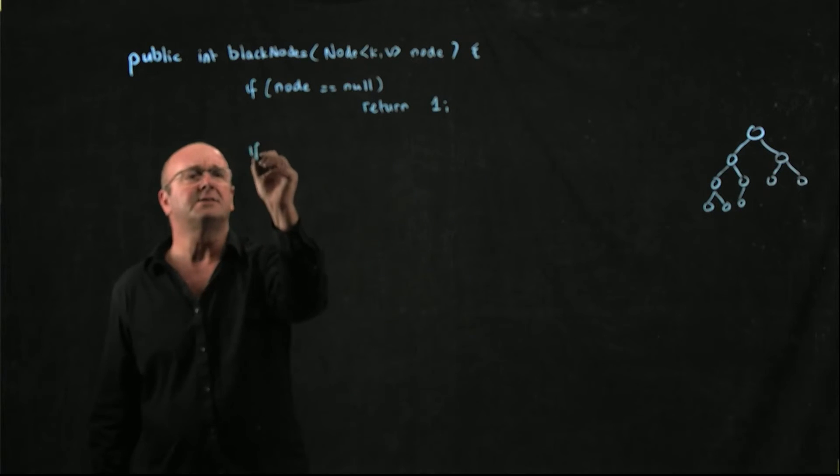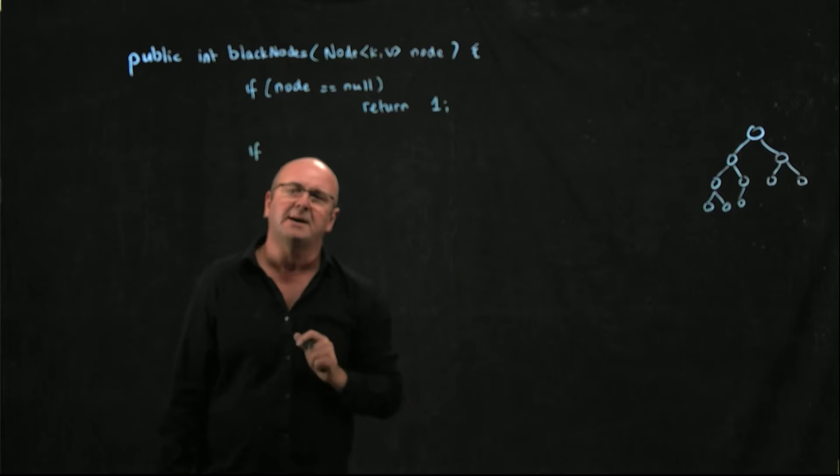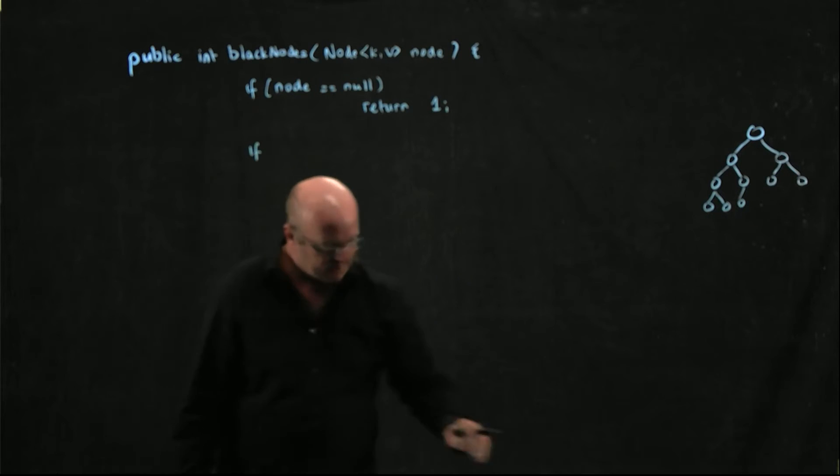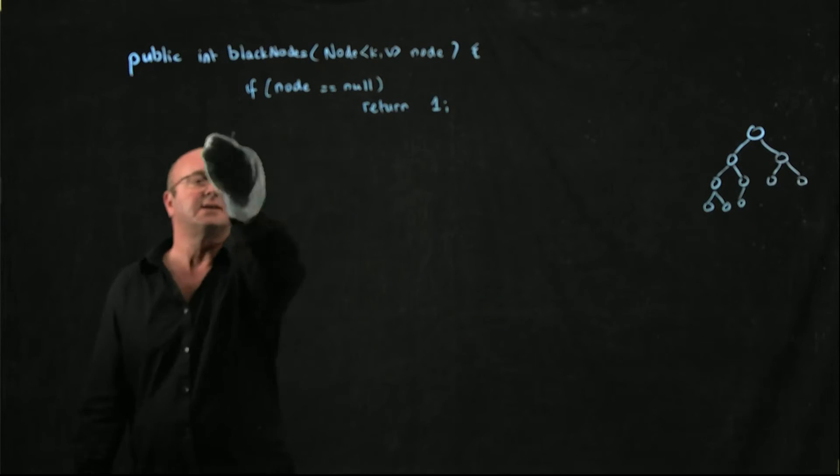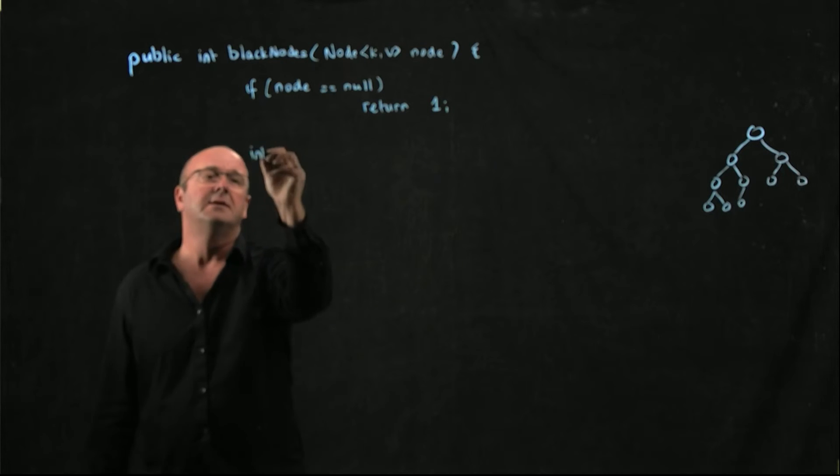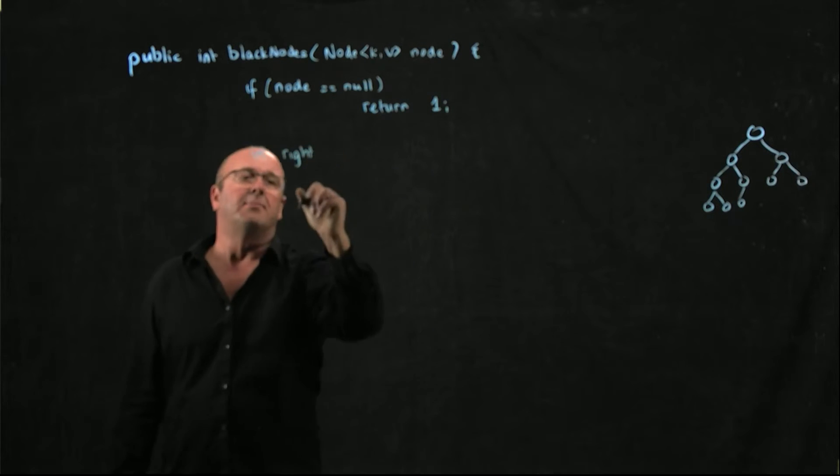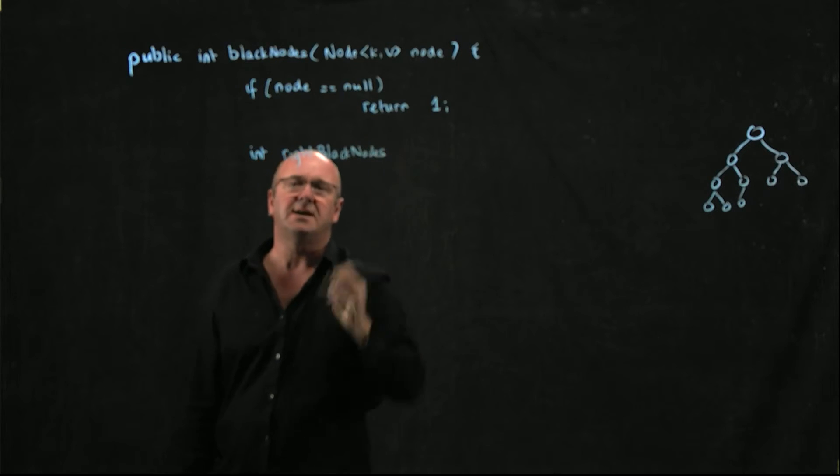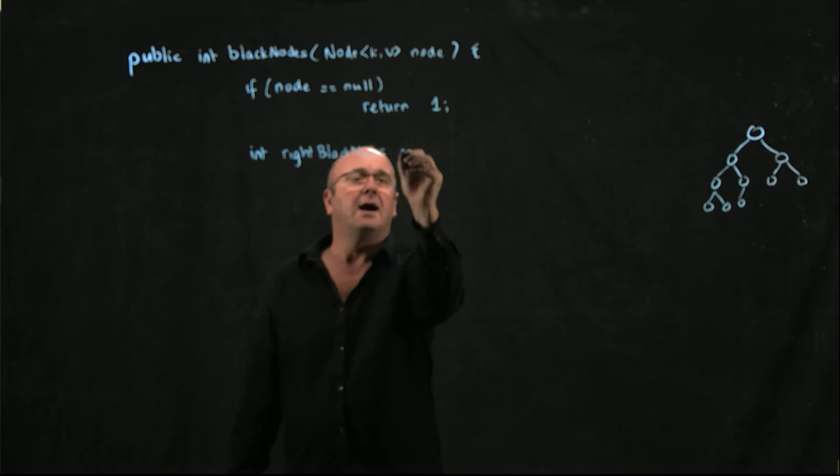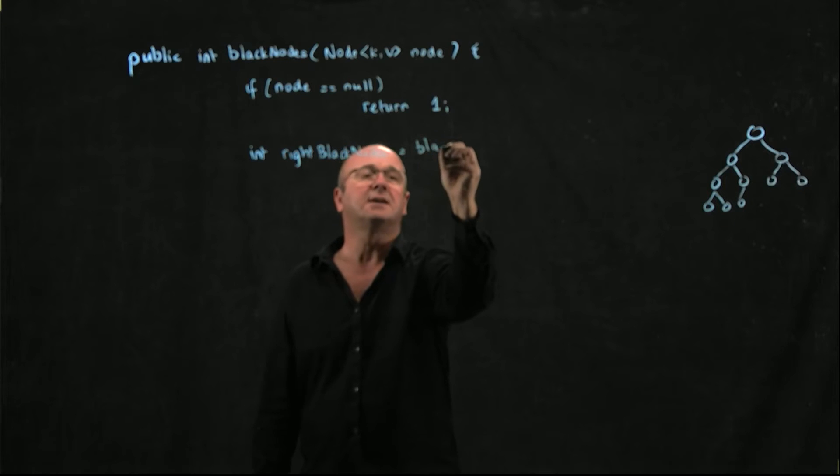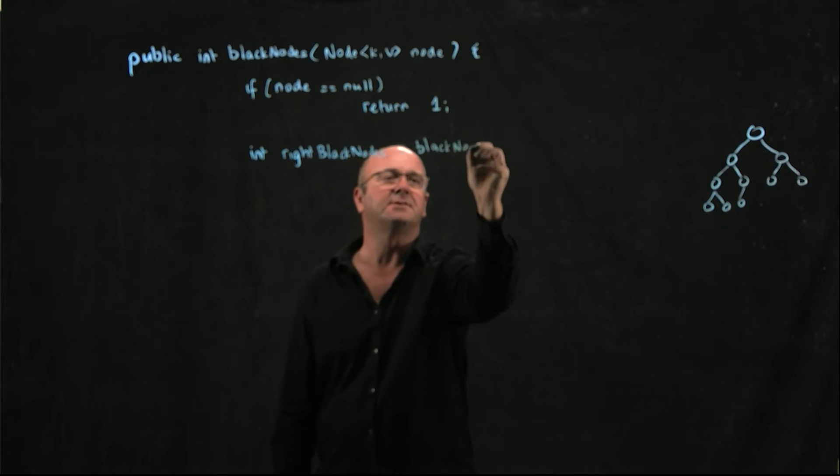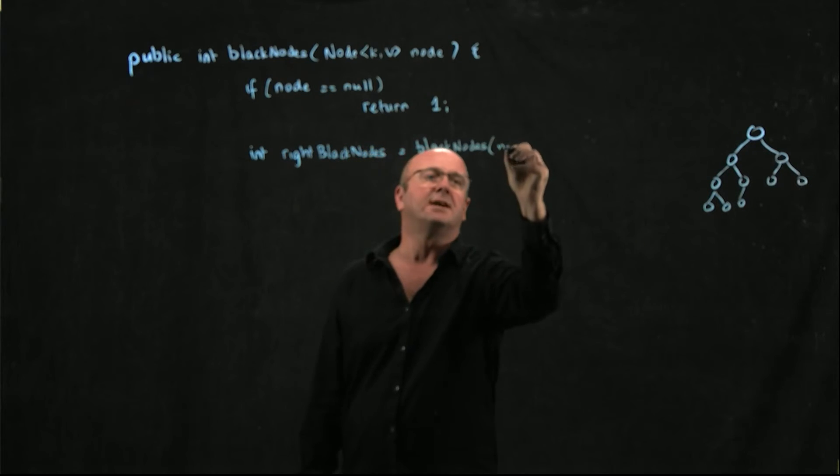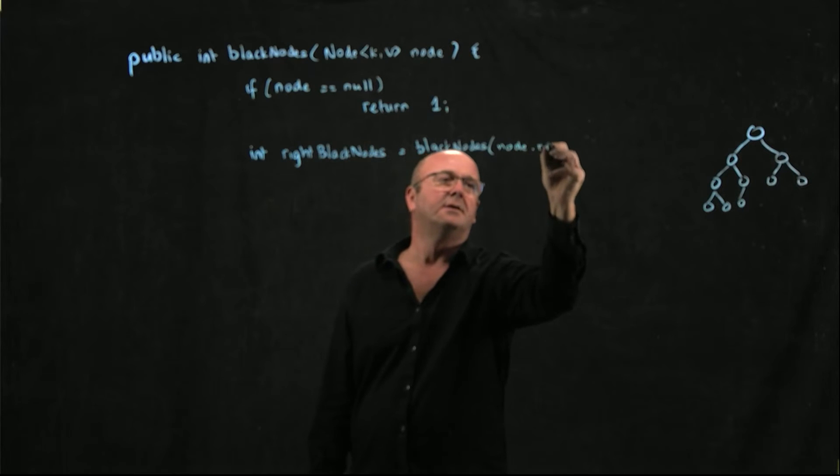So now let's just calculate how many black nodes there are on the right hand side of our tree. So int the black nodes on the right hand side, and we'll just call ourself because we know how to do it. So we're going to say node dot right.